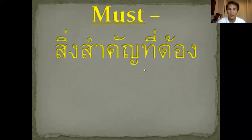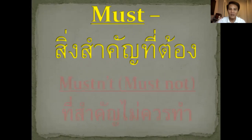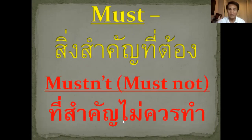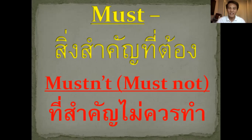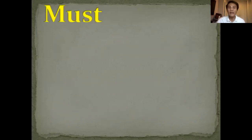Okay, what is must and must not? I put a Thai translation so that you will be able to understand in Thai. Must means... Do you understand? Must not, or mustn't — this is the meaning of mustn't. So what is must? Students, read. There are things that we must do and must not, or mustn't do.